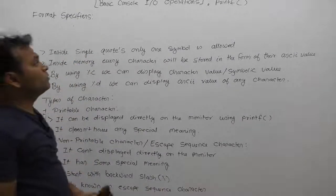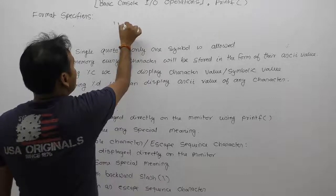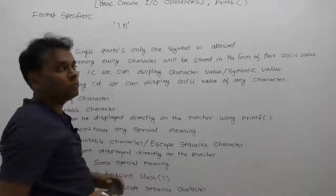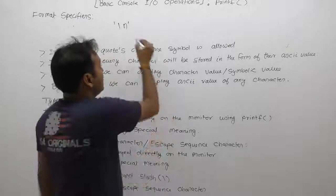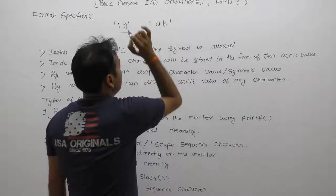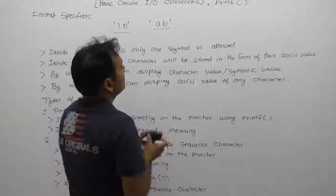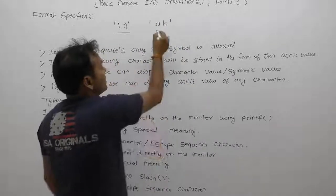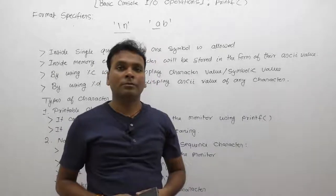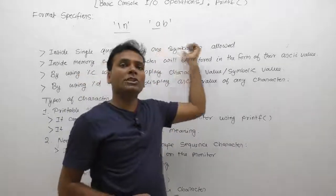Inside single quotes, only one symbol is allowed, but sometimes some characters may be created using two symbols, so maximum two symbols are allowed. This is the escape sequence character — for example, 'a' and 'b' inside single quotes. When we supply two symbols inside single quotes as normal characters, only the first character is recognized, not the second.